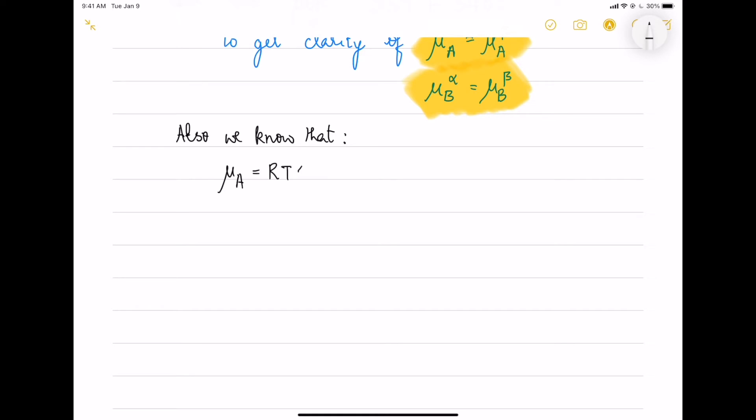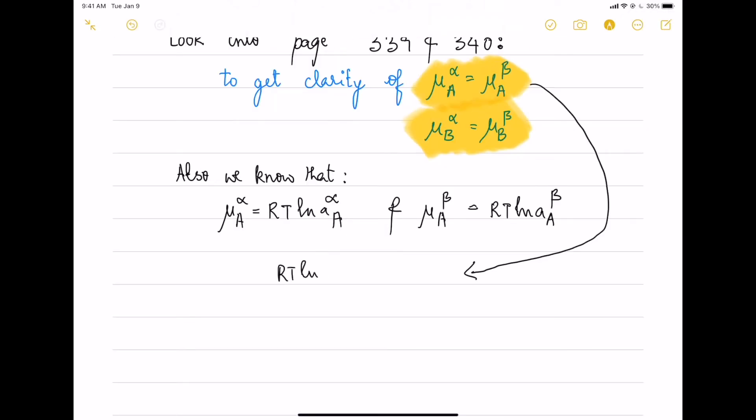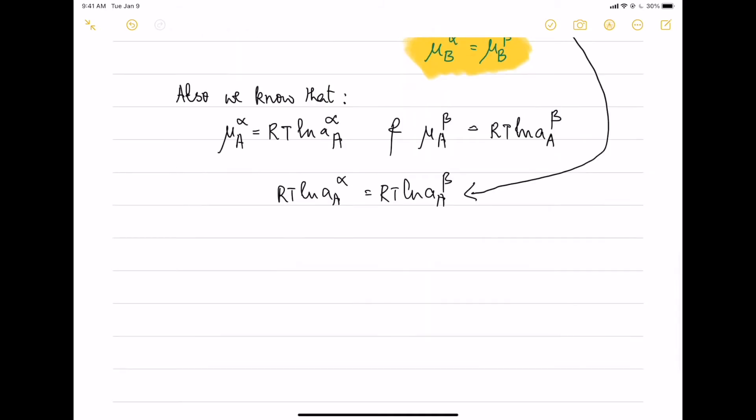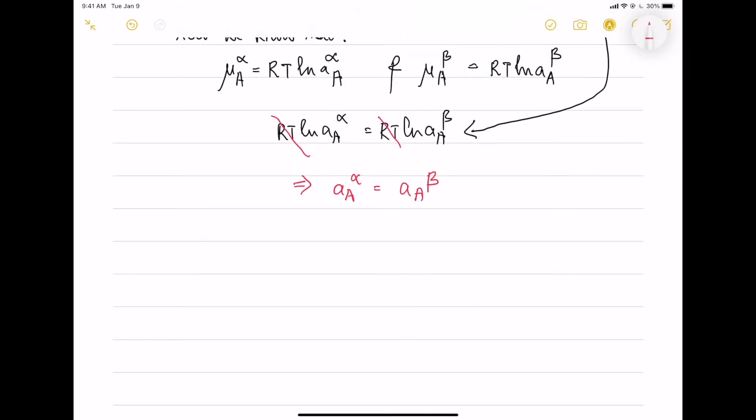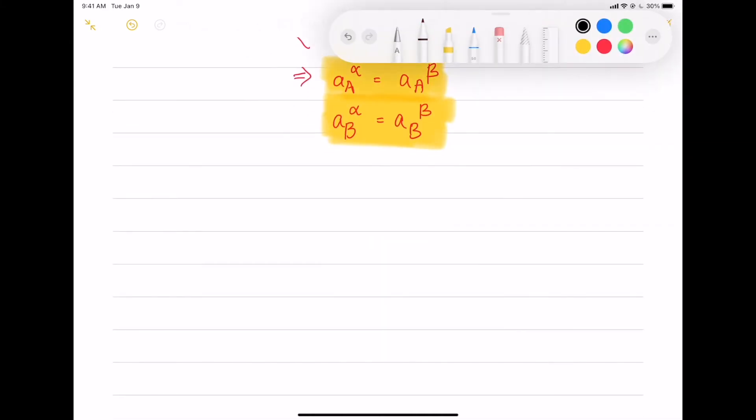Also, we know that the chemical potential can be written in terms of activity. So, we will do the same and using that equation above, we can say that activity of component A in alpha phase equals activity of component A in beta phase. And similarly for the B component, so here A is MgO and C is calcium oxide.